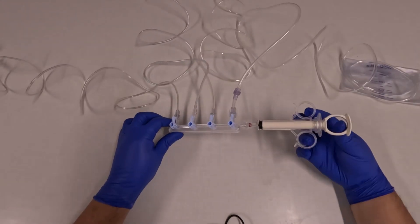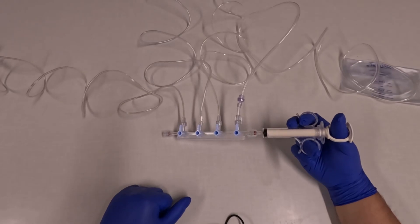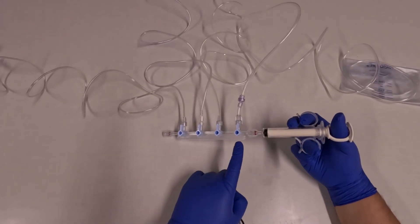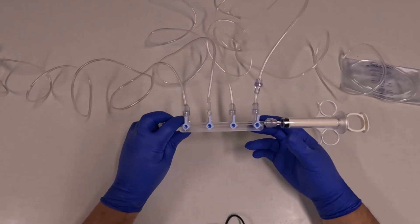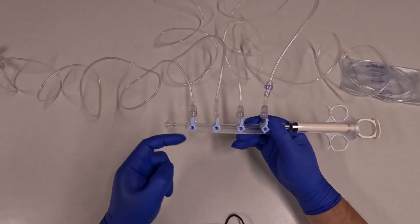As you can see on the manifold, each of the ports has an associated three-way stopcock. This is how you decide the path that fluid will travel when you either withdraw or push on the syringe.